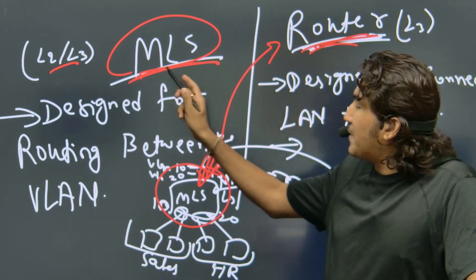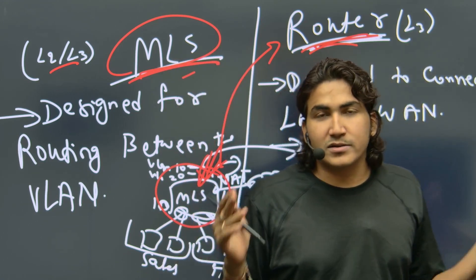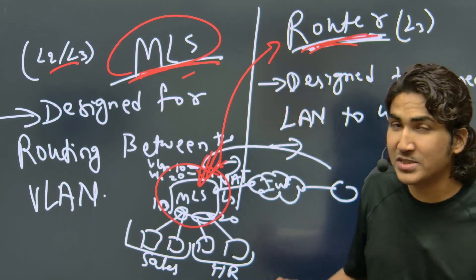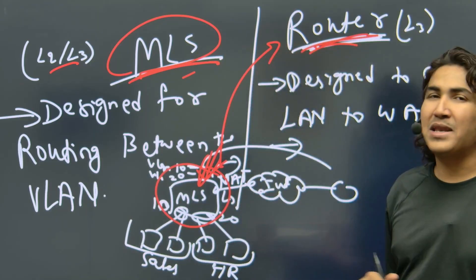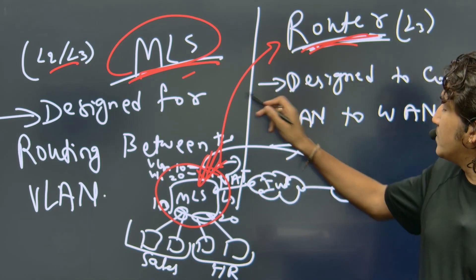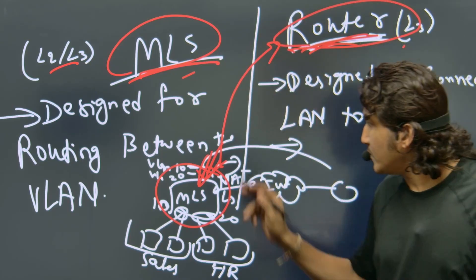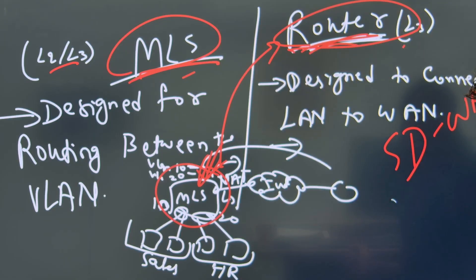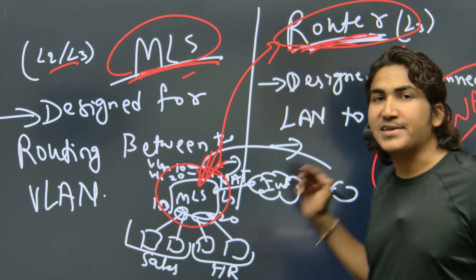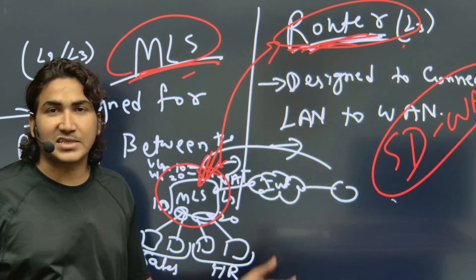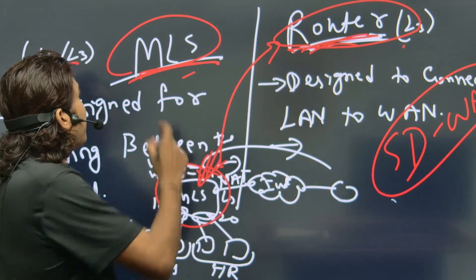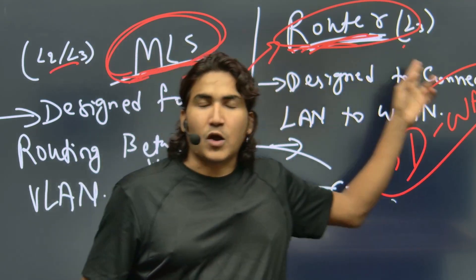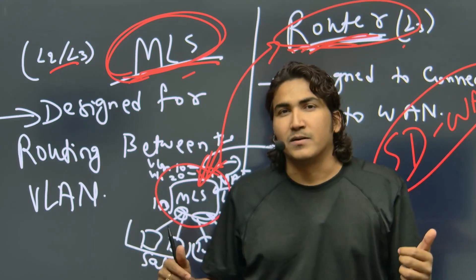Use MLS for simple scenarios: small networks, network segmentation, internet access, and policies between departments. In large enterprise companies, always use router on the WAN. Nowadays we also use SD-WAN. Routers like CSR, ISR, and ASR support SD-WAN, but MLS cannot support SD-WAN technology.